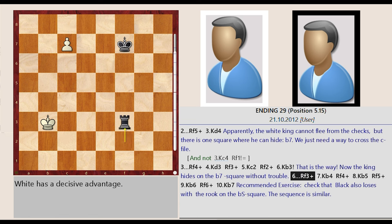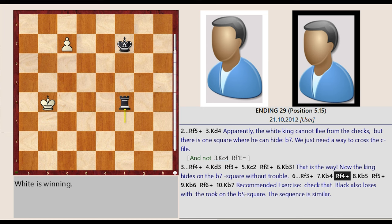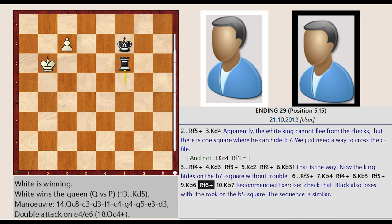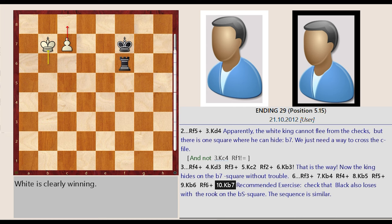Rook f2 f3. King b3 b4. Rook f3 f4. King b4 b5. Rook f4 f5. King b5 b6. Rook f5 f6. King b6 b7.